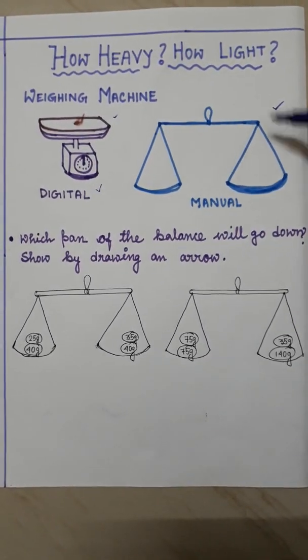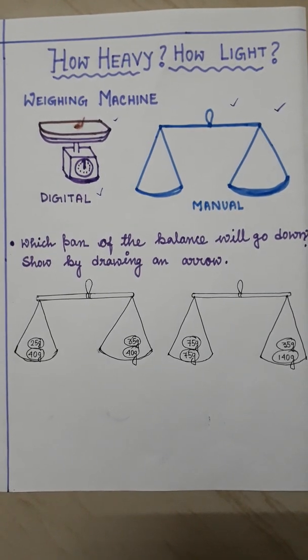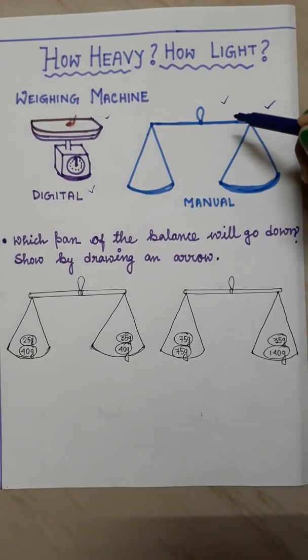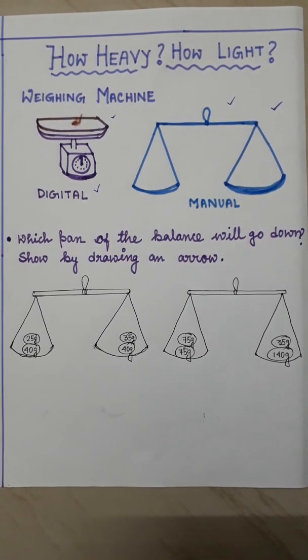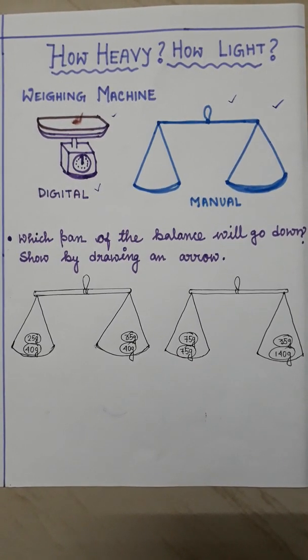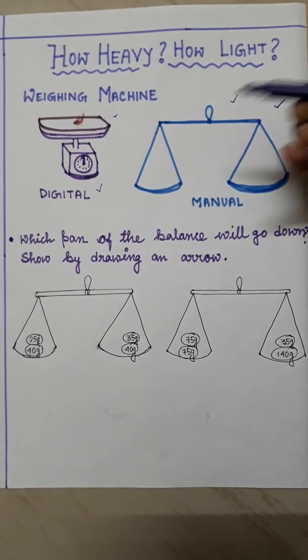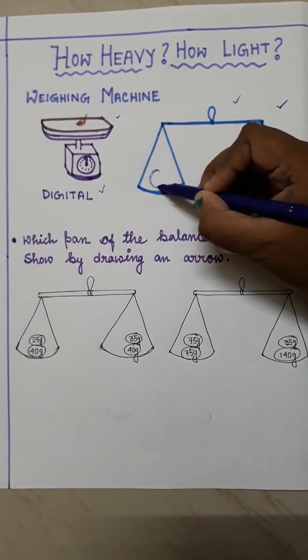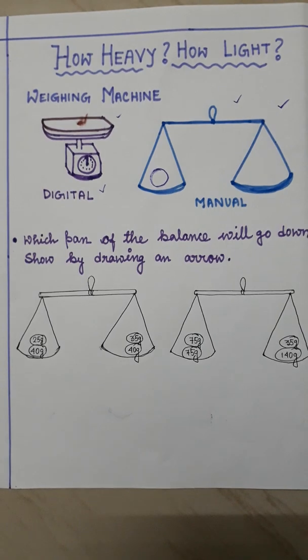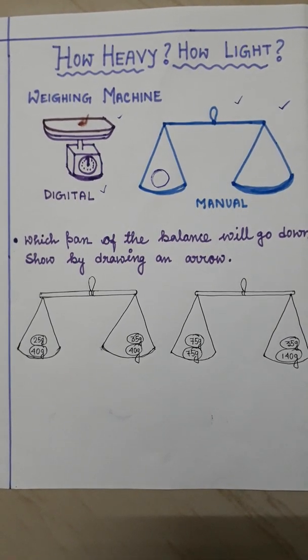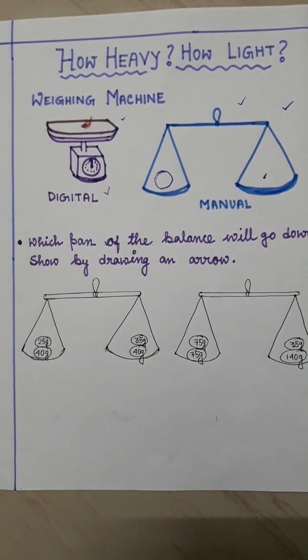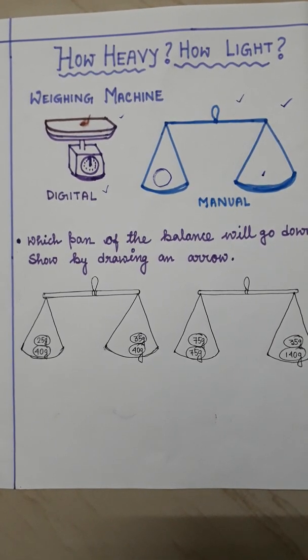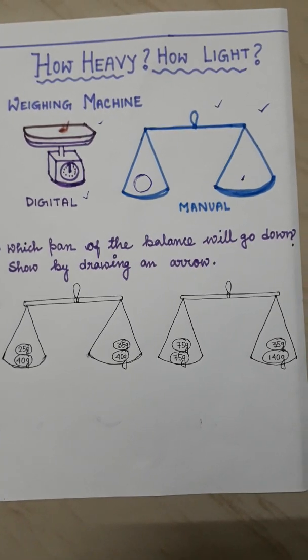And these are manual weighing machines. You can see this type of manual weighing machines in markets, fish markets or vegetable markets where people keep items in one pan and weighing dies in the other one. In this way they measure the weight of different items.